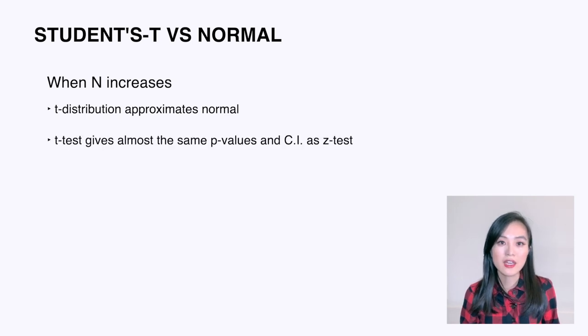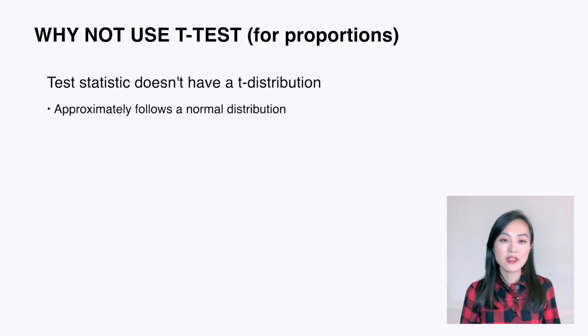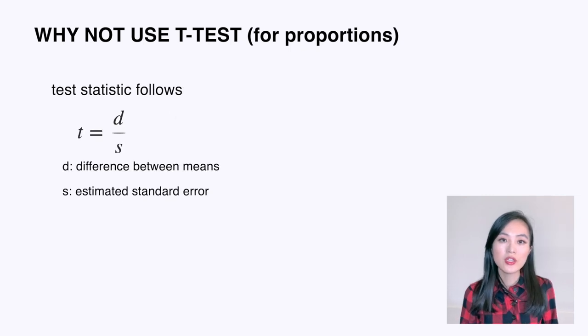Actually, for large sample sizes the t-test gives almost the same p-values and confidence intervals as a z-test. The second thing I want to clarify is why we don't use t-tests for proportions. We mentioned a z-test or binomial test to compare proportions and didn't mention a t-test — why? The reason is that the test statistic doesn't have a t-distribution; it does approximately have a z-distribution.